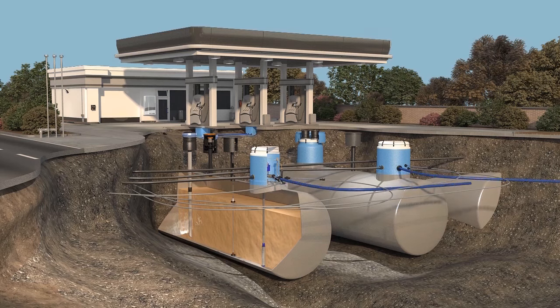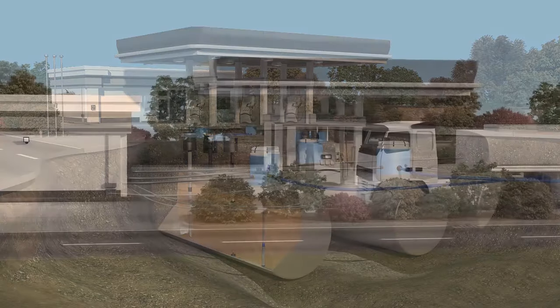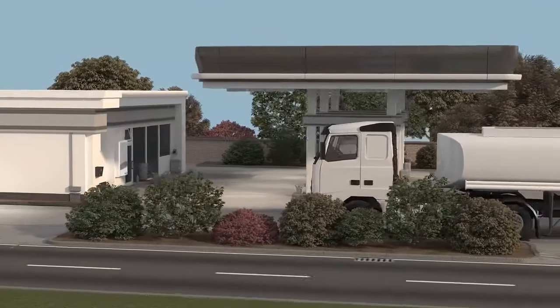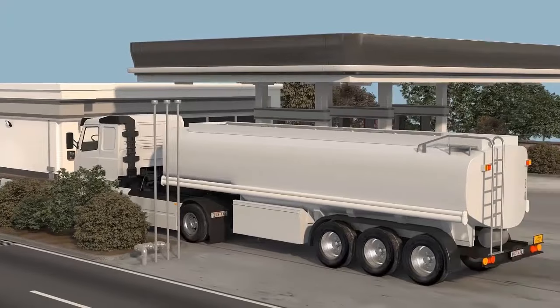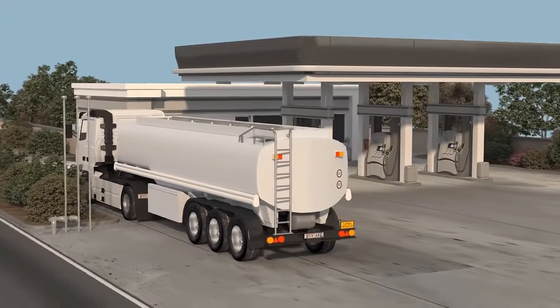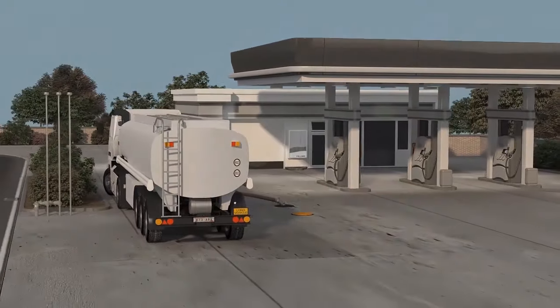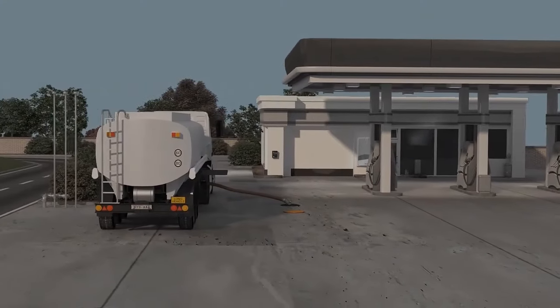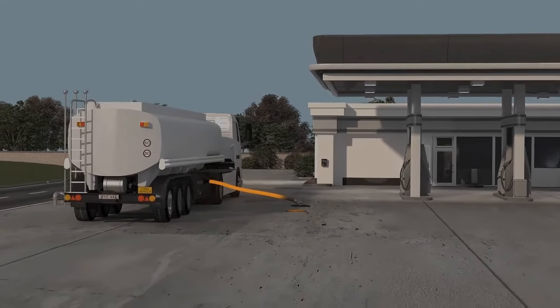In order to fill up an underground storage tank, vapors need to be simultaneously removed while fuel is being delivered. When a tank truck arrives to deliver fuel, it will connect its hose to a tube that leads directly into an underground fuel storage tank.